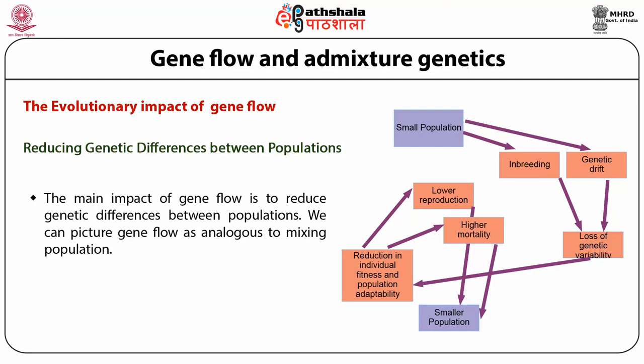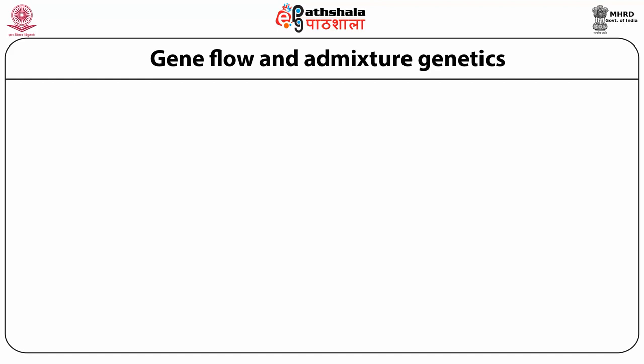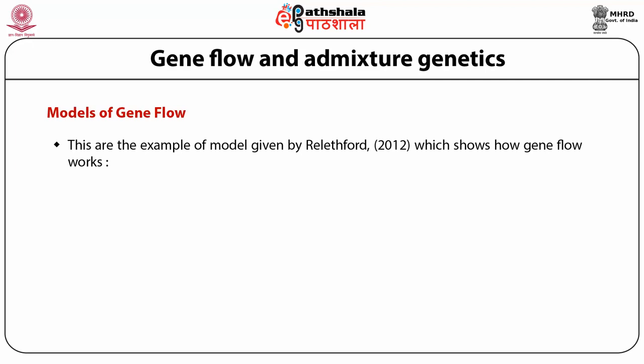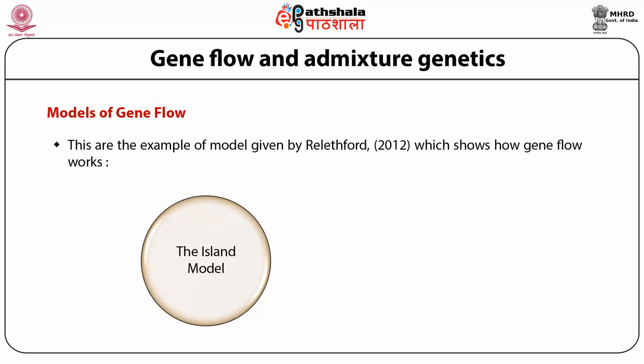Although alleles are not paint and do not actually merge together, the point is that mixing of gene pools can alter the allele frequencies. Now, to explain how gene flow takes place between populations, several models of gene flow have been proposed. Some of the models show how gene flow works in nature. The first one is the island model, given by Wright. We can imagine an island that receives a certain amount of migration from the mainland, and we can see what effect gene flow from the mainland has on the allele frequency of the island.